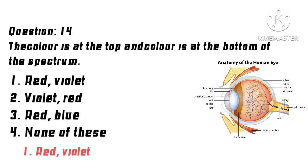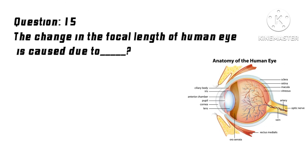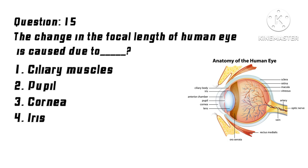Question 14: Which color is at the top and which color is at the bottom of the spectrum? Options: 1. Red, Violet, 2. Violet, Red, 3. Red, Blue, 4. None of these. Correct answer: 1. Red, Violet.